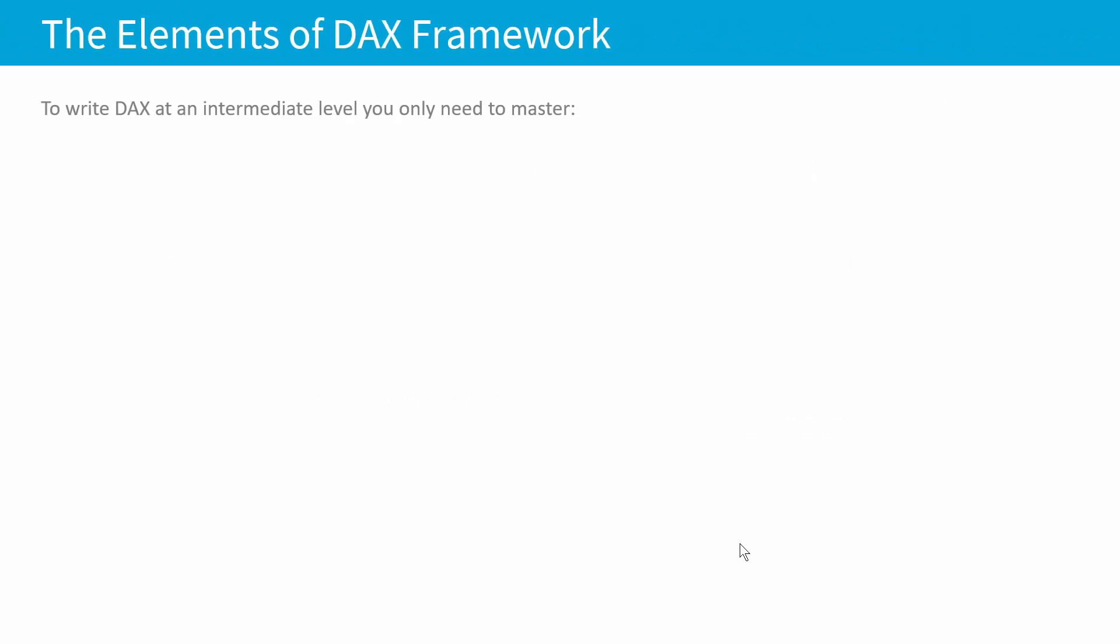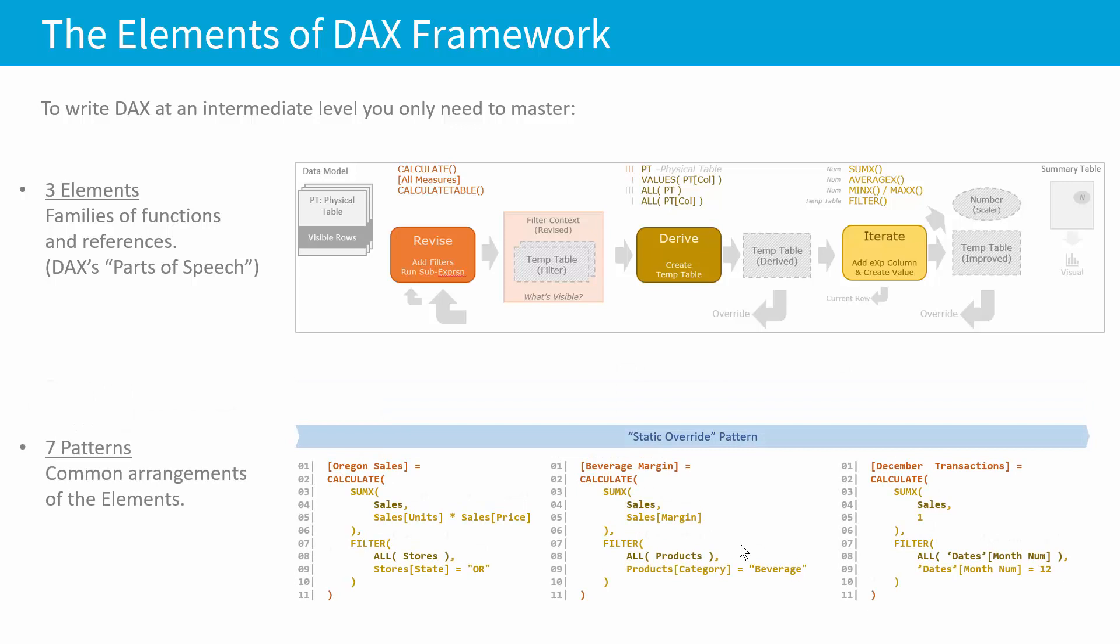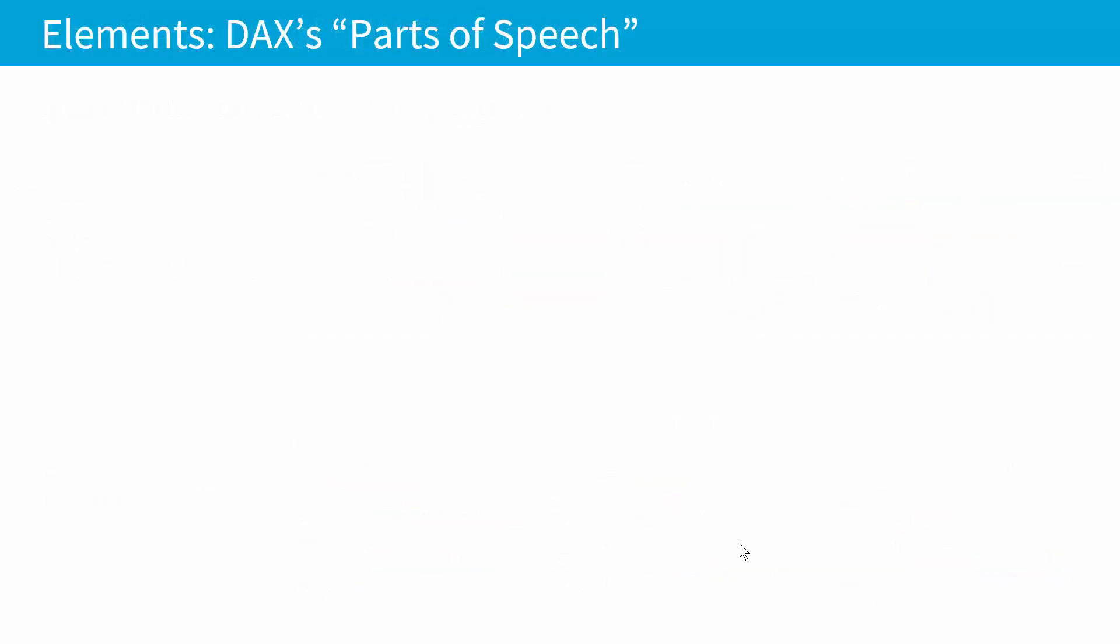So what do we mean by this? The elements of DAX framework, the idea here is that to write DAX at an intermediate level, not an advanced level, but at an intermediate level, you only need to master, you only need to understand three elements, which are families of function references. These are sort of like DAX's parts of speech and seven patterns. These are just common arrangements of those elements. If you learn those basic things, you will be able to write DAX at an intermediate level and also understand what's happening. So let's look at each one of these, the elements. This is sort of the most important part as far as I'm concerned. Some folks like the pattern starting off, but I think the elements are even more important. Not think, I'm almost certain that they are.